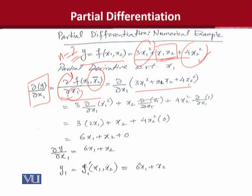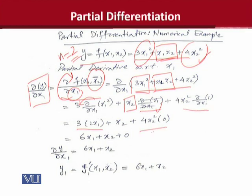So, आप देख रहे हैं कि वही expression मैंने लिखा और उसको breakdown किया into its derivative — यहाँ sum rule लगाया, coefficient को बाहर लिख लिया, और इसका solution यह है. Here there is an interesting point: यहाँ पर x2 जहाँ use होगा, लेकिन x1 से multiply हो रहा है, इसका मतलब वो constant नहीं बल्कि coefficient of x1 बन जाएगा. इसलिए x1 को as a variable treat करके इसका derivative calculate किया — and you can straight away see that यहाँ पर x2 constant treat हो रहा है. इसको समझने की कोशिश कीजिए — very simple.